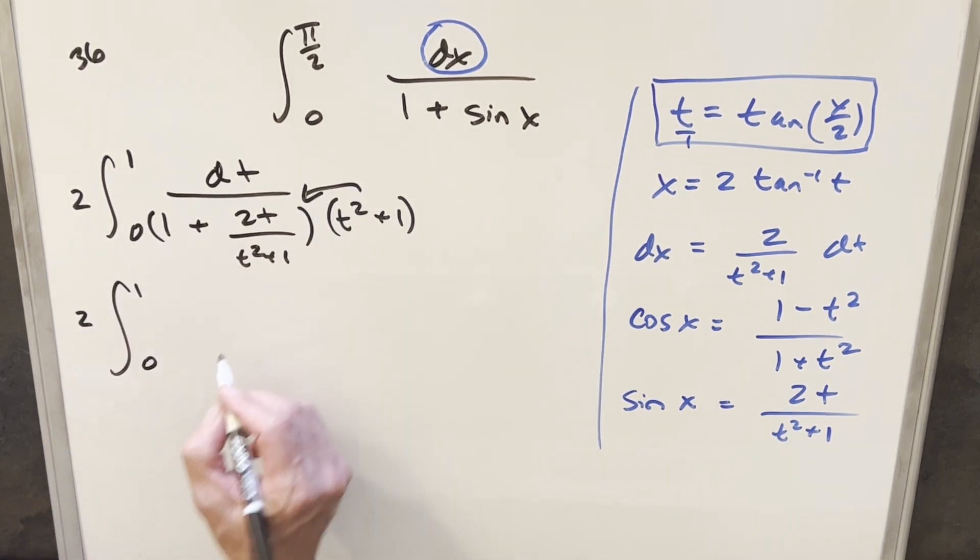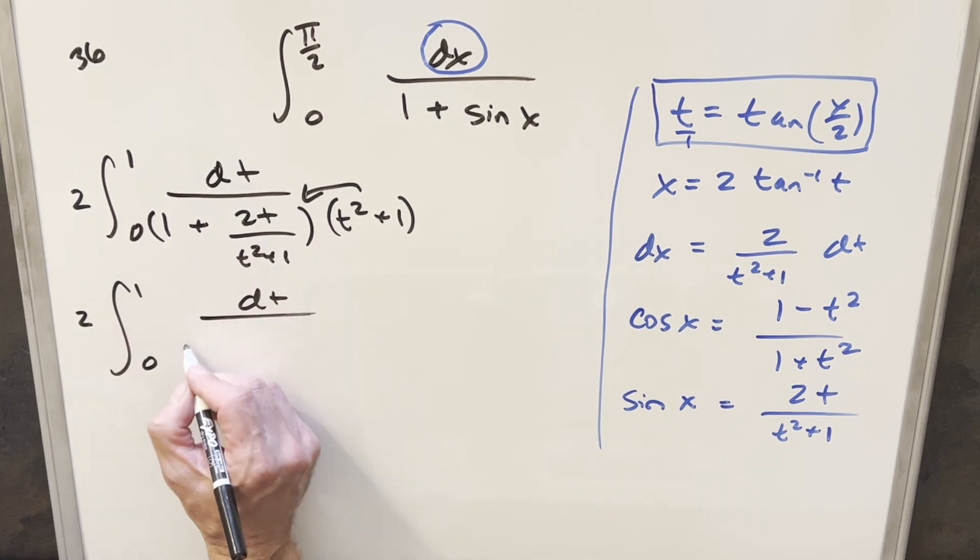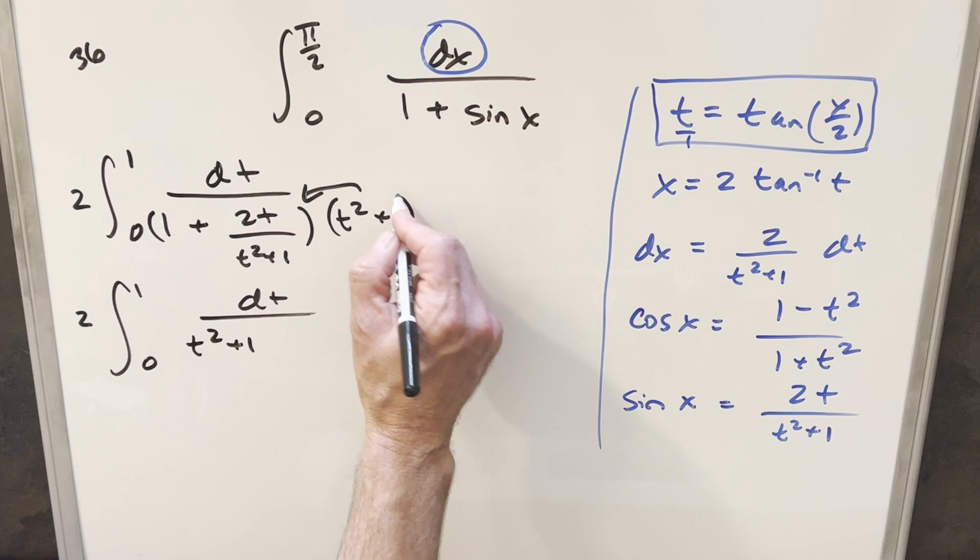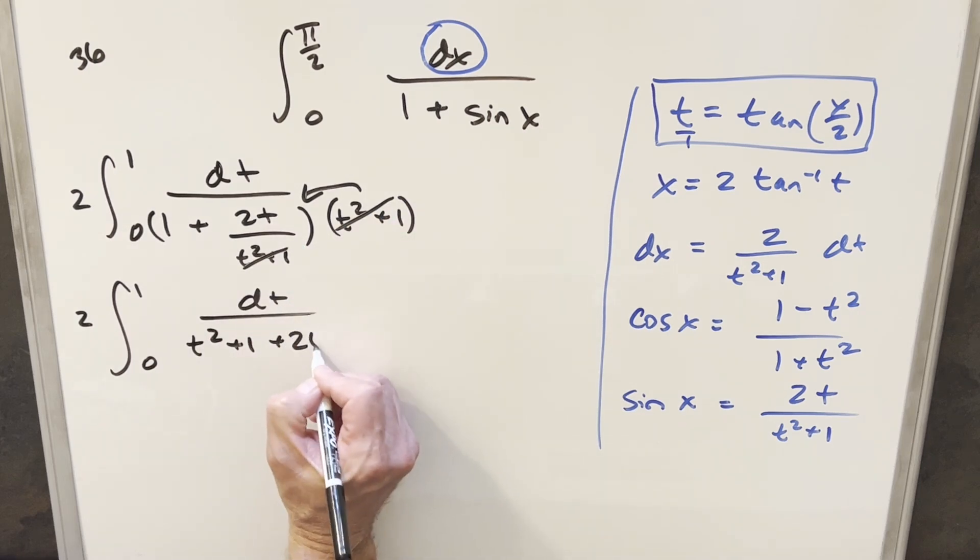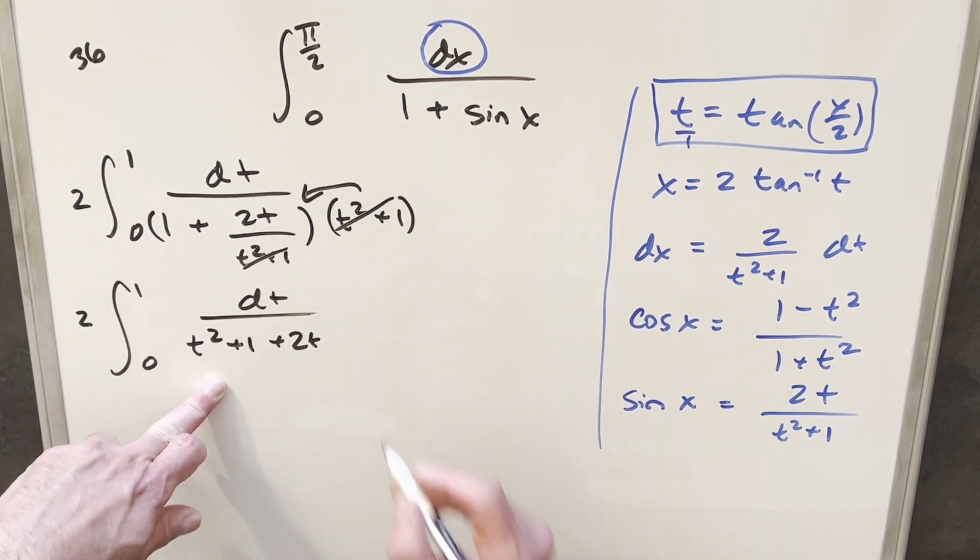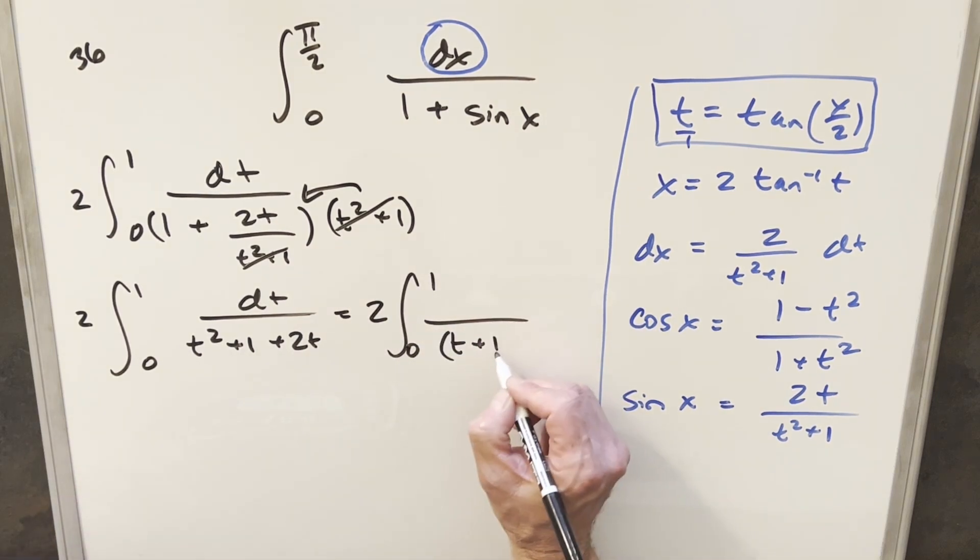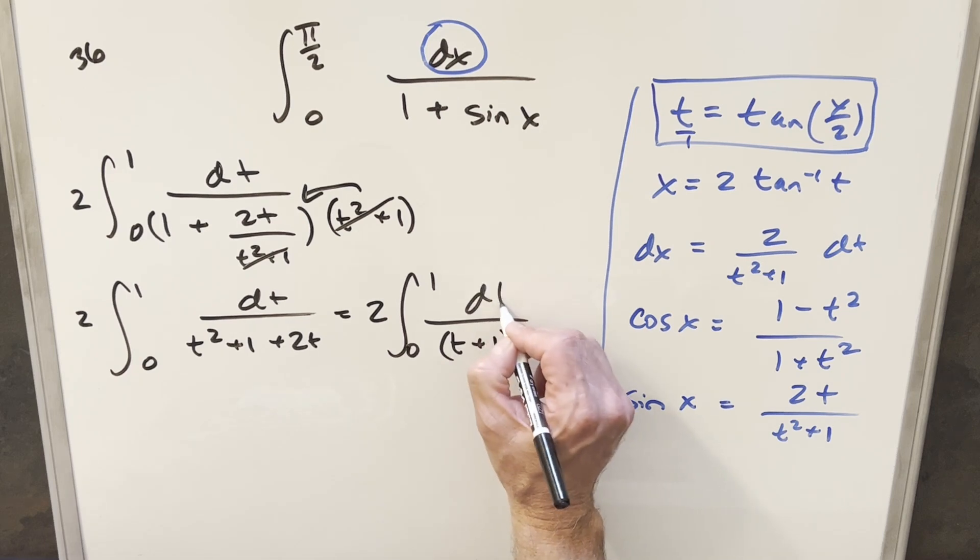And now we just need to distribute in this t²+1 value. So rewriting, bounds stay the same. So t²+1 times 1, we're going to end up with t²+1 here. Multiply this in here, that's going to cancel. We're just left here with 2t. But this is actually a perfect square. So what we can do rewriting this, this here is going to become (t+1)² over dt.